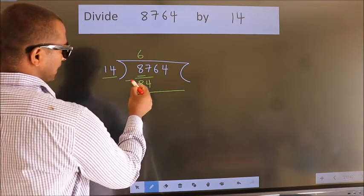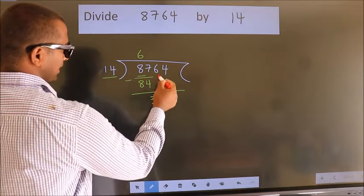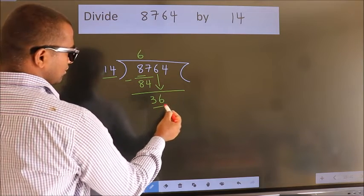Now we should subtract. We get 3. After this, bring down the beside number. So 6 down. So 36.